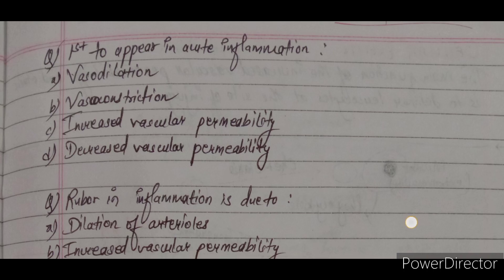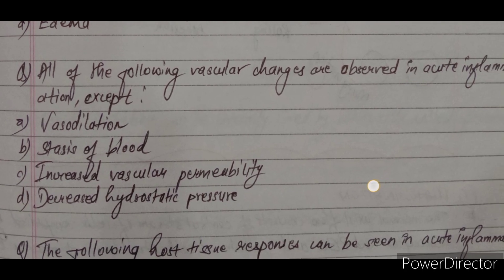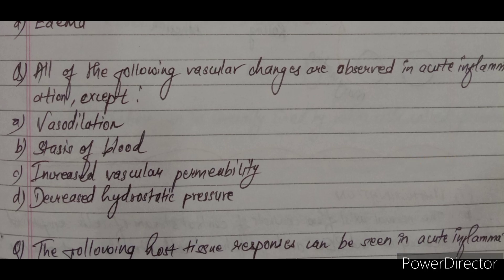Question 6: Rubor in inflammation is due to — A) dilation of arterioles, B) increased vascular permeability, C) increased viscosity of blood, D) edema. The correct answer is A — dilation of arterioles. Due to the dilation of arterioles, rubor — that is redness — is seen in inflammation. You should know all the cardinal signs of inflammation by heart.